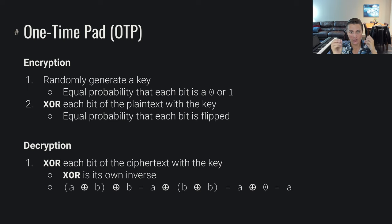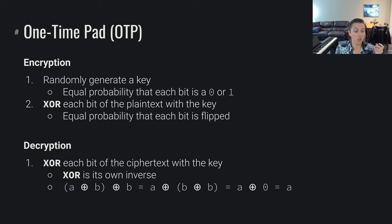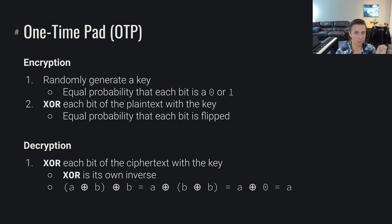In doing so, you've entirely mangled the data because each bit of your original data has equal probability that it was flipped or not flipped. Assuming maximal entropy in the key with equal probability that each bit is a zero or one, you now have equal probability that each bit of the ciphertext is a zero or one. This completely garbles the message from plaintext to ciphertext — the ciphertext without that key is completely unintelligible.